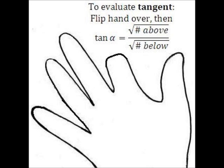Evaluating the tangent of an angle requires an extra step. After lowering the necessary finger, flip your hand over so that your palm is facing away from you, your pinky is up, and your thumb is down. The fingers all still represent the same values, so make sure you lower your finger before you flip your hand over. You don't want to get confused. Then, simply take the square root of the number of fingers above divided by the square root of the number of fingers below.